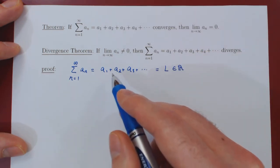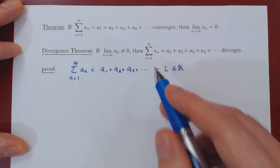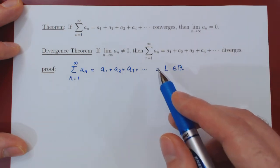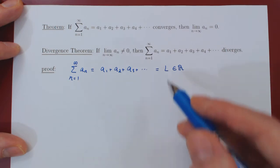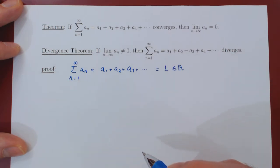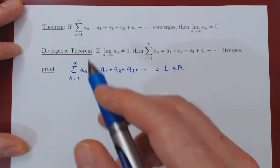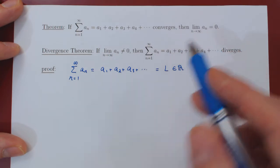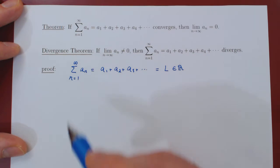So as we keep adding more and more terms of our series, we are getting closer and closer to the actual answer L. So to prove the result that a_n has to shrink to zero as n tends to infinity, we consider two partial sums of the infinite series.